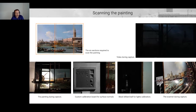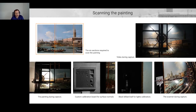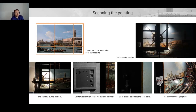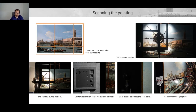The billiard ball is how we calibrate the lights: the LEDs reflect on the billiard ball and we extract the position of each LED as reflected on the ball. We don't have to do this calibration every time — only if you change the distance to the painting. For this painting, we calibrated once at the beginning, and because we maintained the same distance throughout, we could reuse the same light calibration.